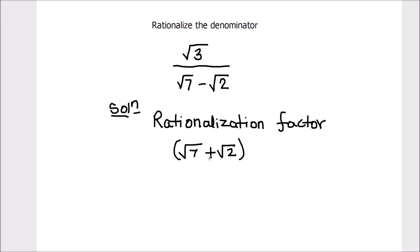So let's multiply this term with the numerator and denominator of our expression. So that's root 3 divided by root 7 minus root 2 times root 7 plus root 2 divided by root 7 plus square root of 2.